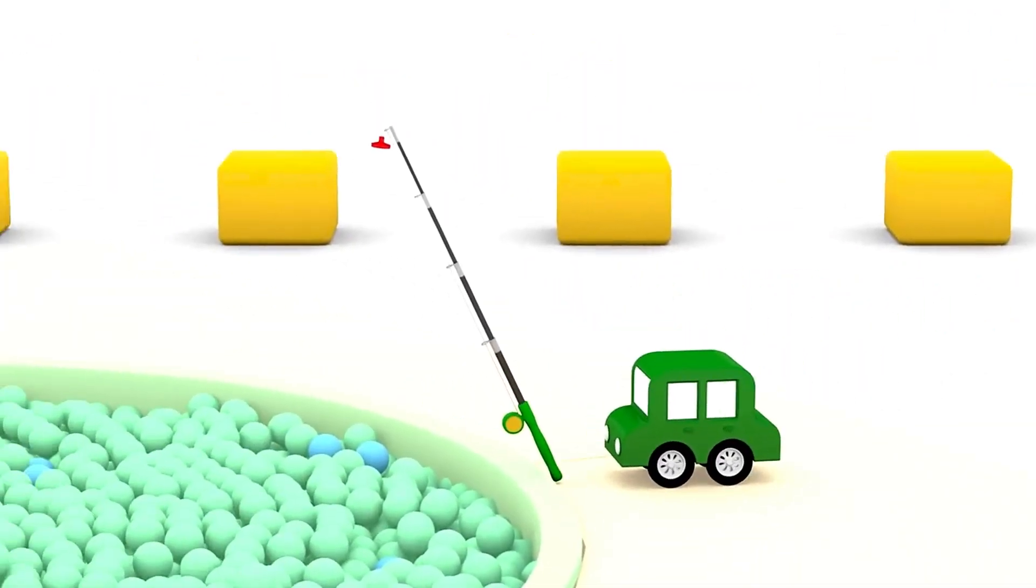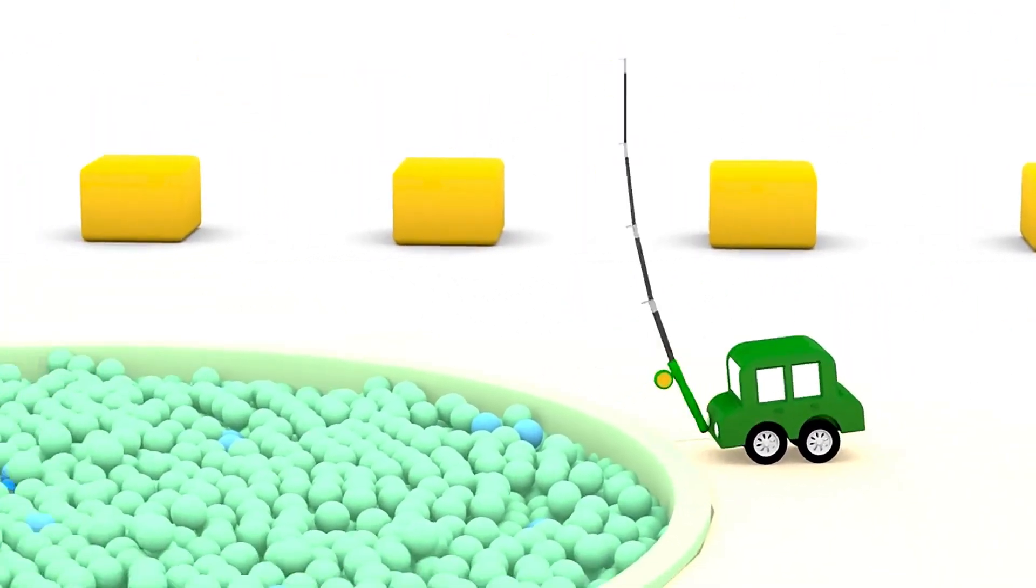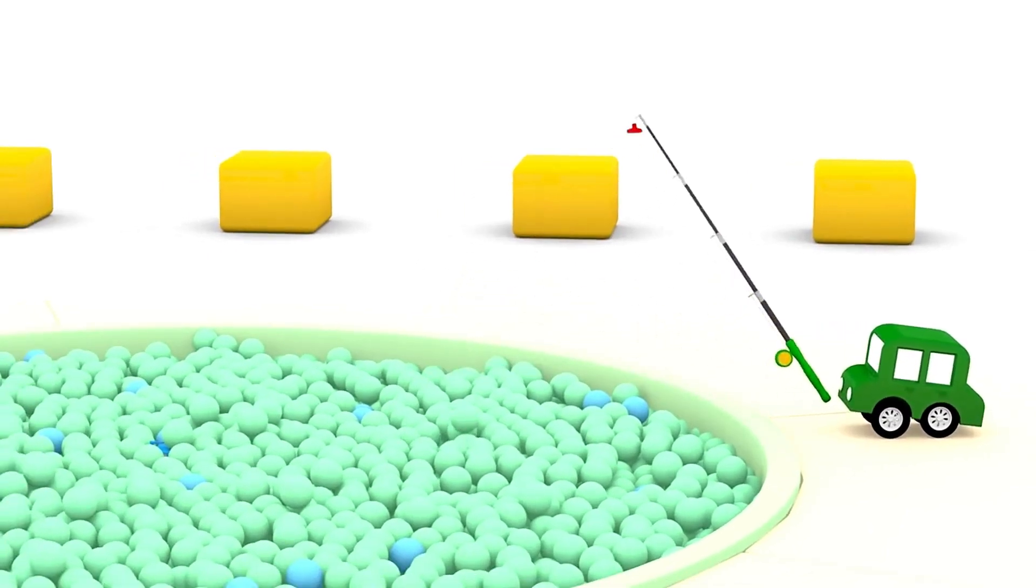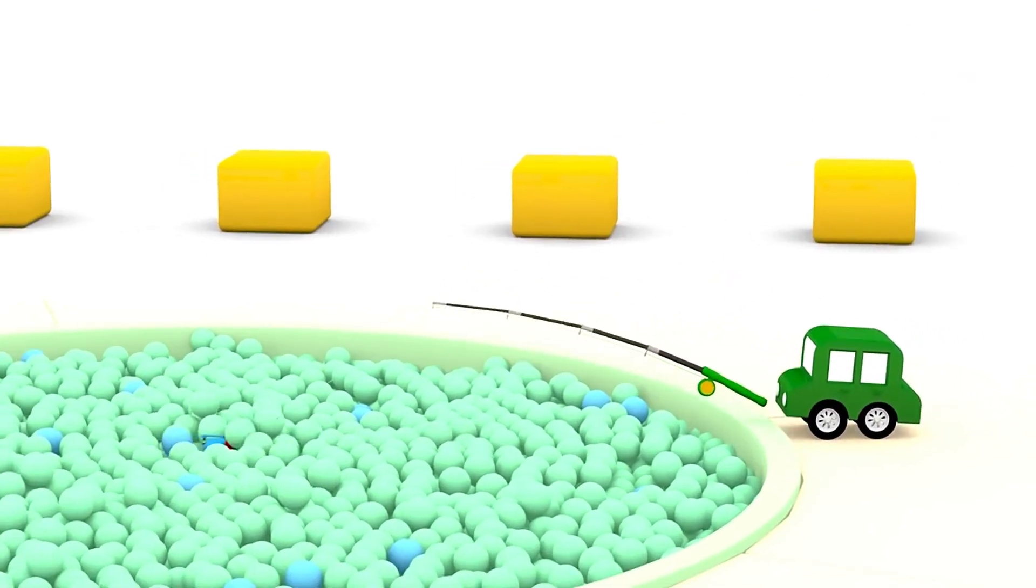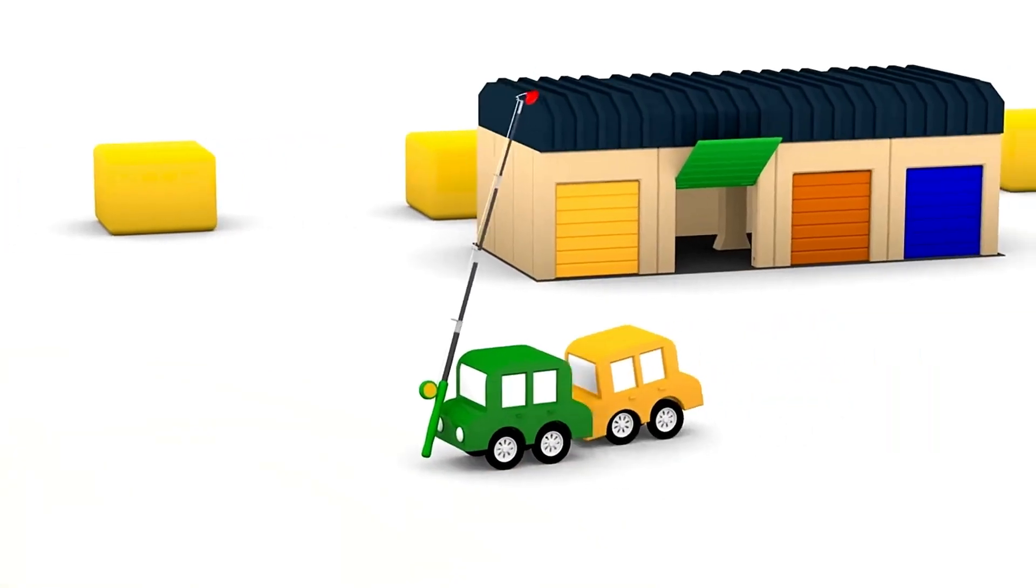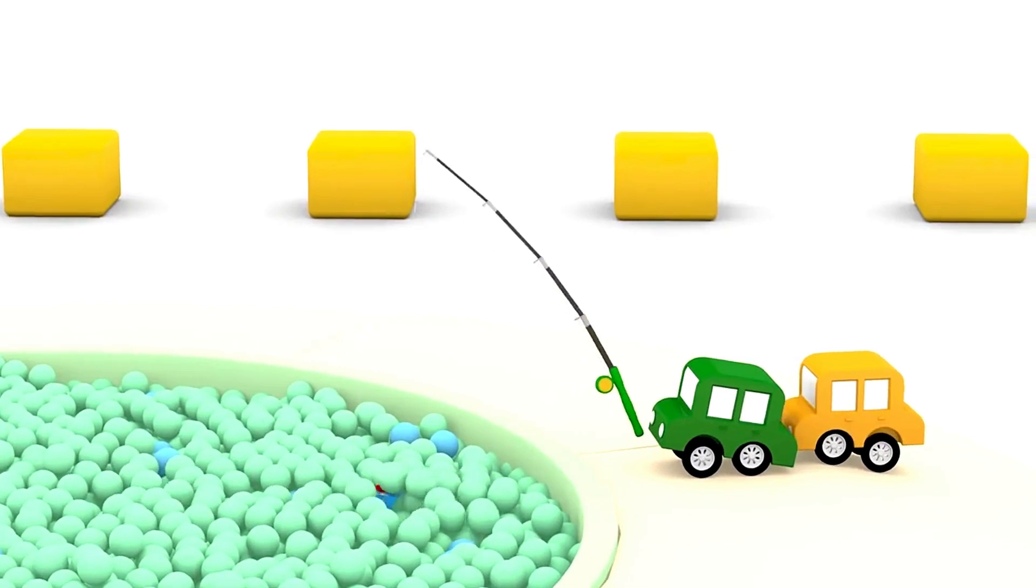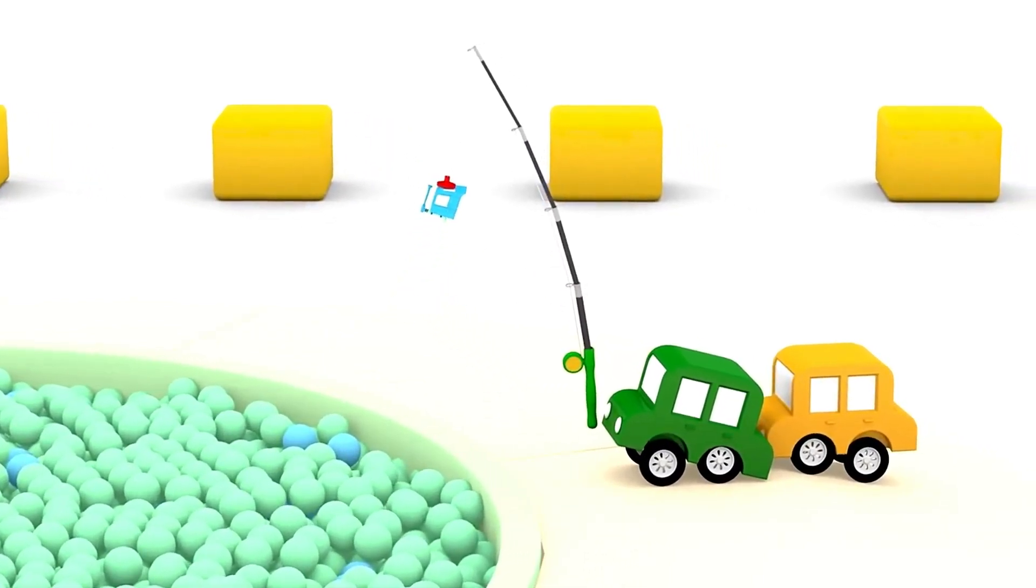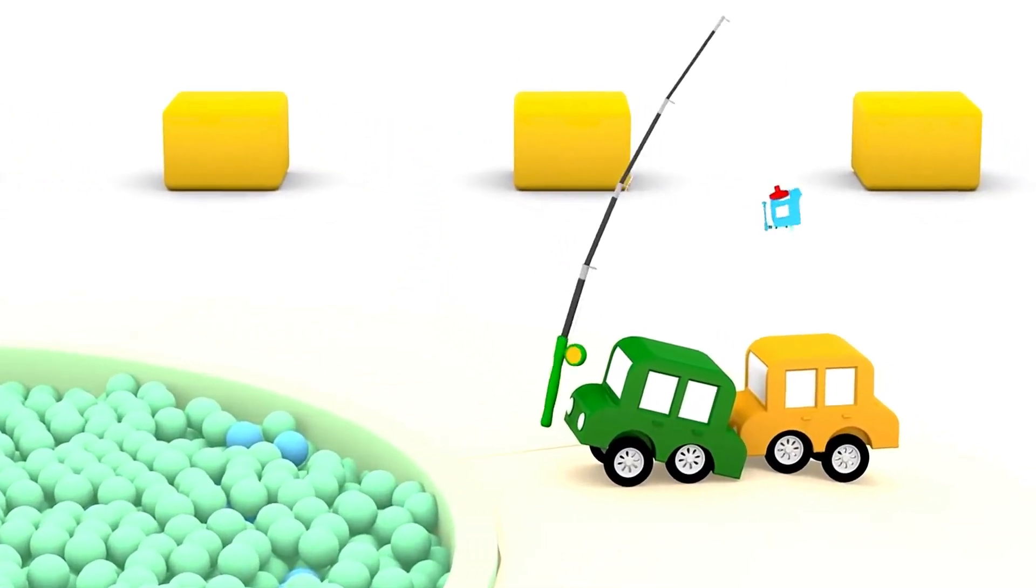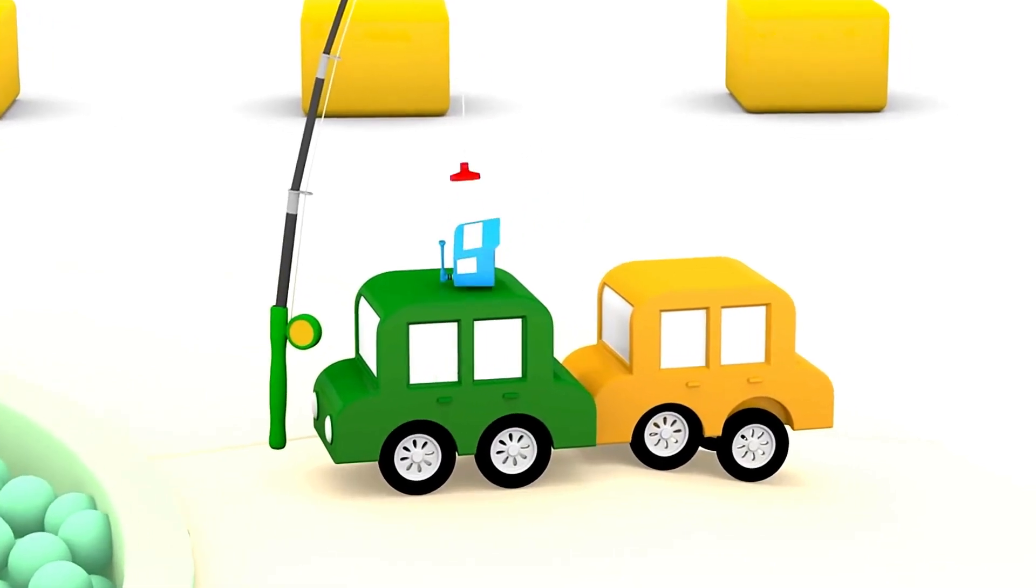Now the green car decides to go fishing for truck parts in the green ball pool. Yellow car will help you. Oh, you found something. What is it? It's a truck cabin.